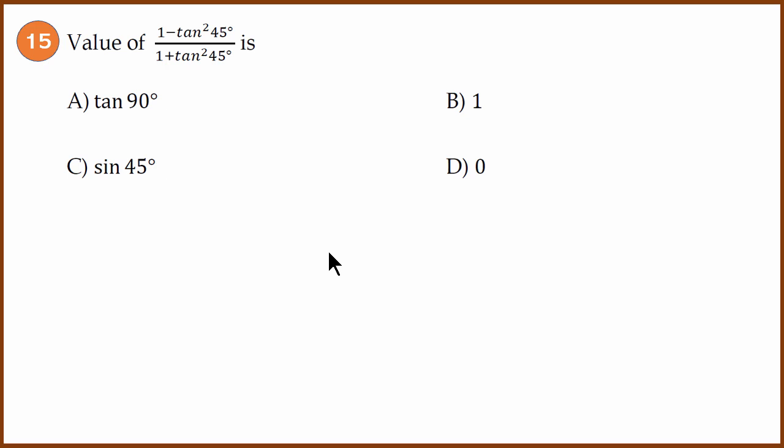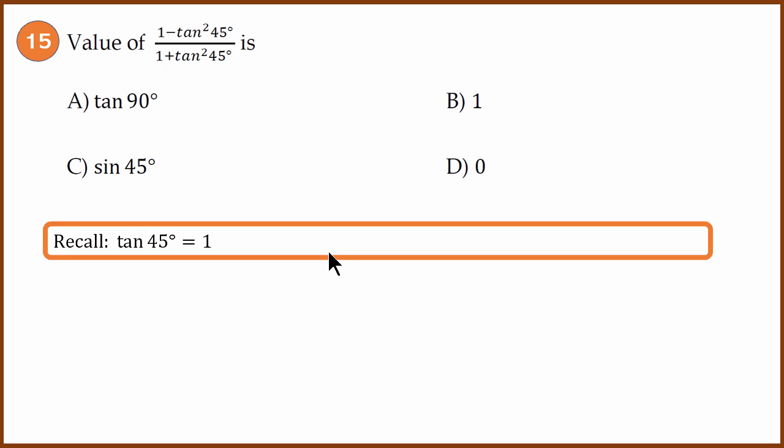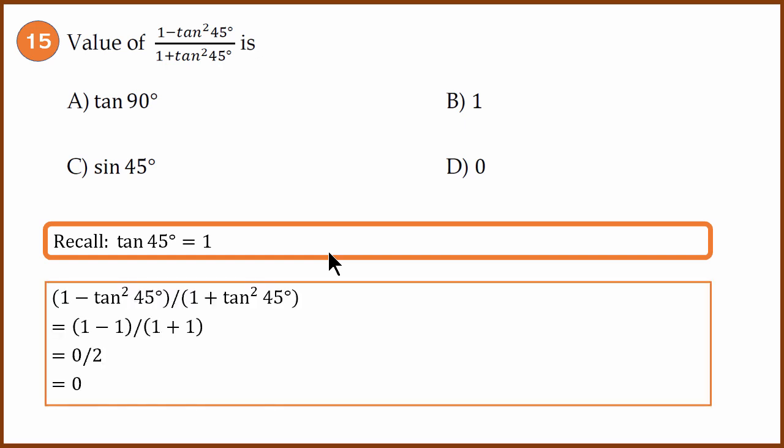Question 15: Trigonometry value of key angle question. The key is we need to remember tan 45° is 1. So (1 - tan² 45°)/(1 + tan² 45°) equals (1 - 1)/(1 + 1). 1 - 1 is 0, 1 + 1 is 2. The answer is 0, option D.